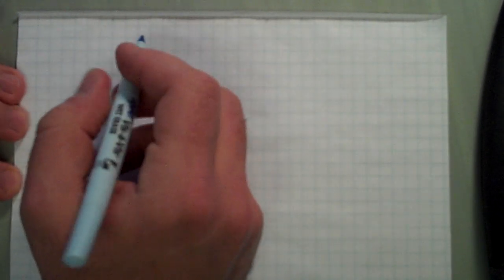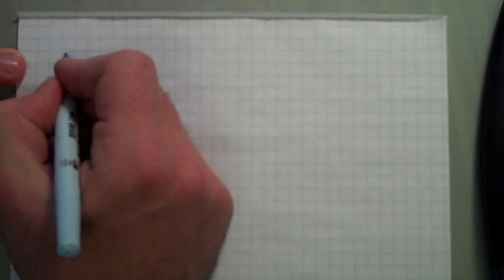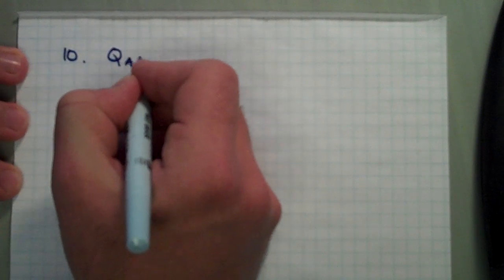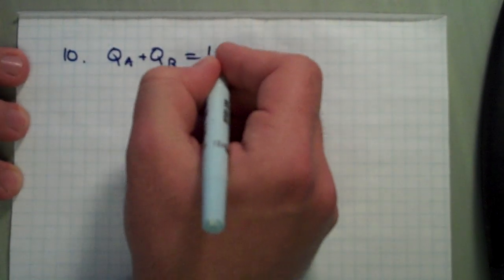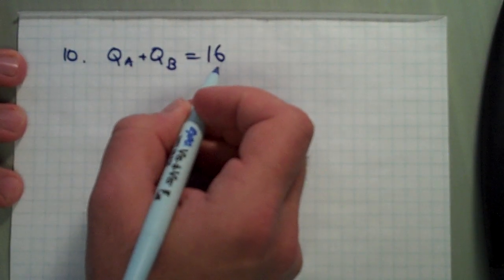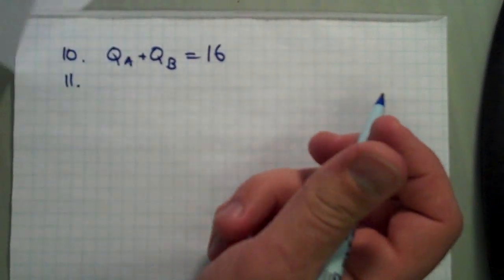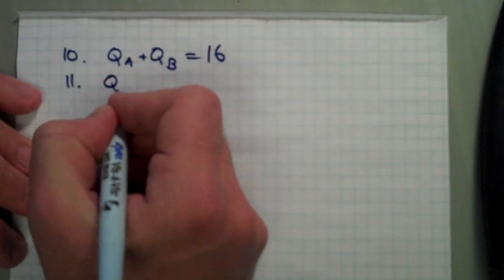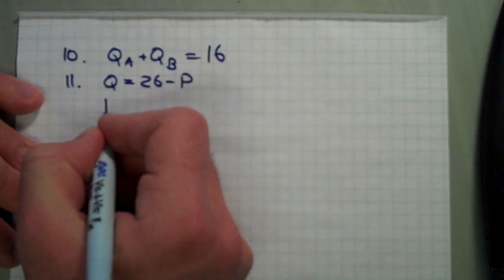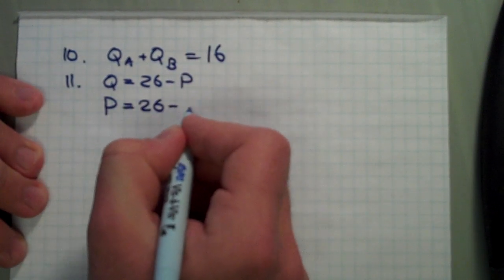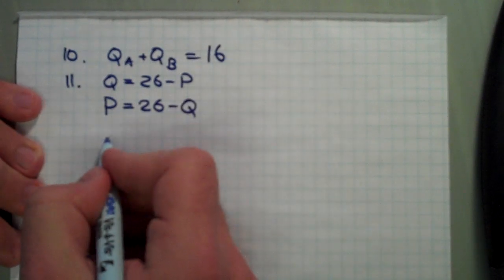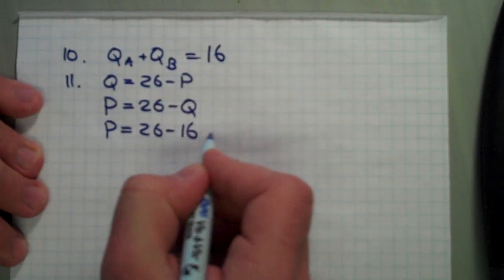Once we know each firm's quantity, we can calculate total output and market price. Total output is QA plus QB equals 8 plus 8 equals 16. Using the inverse demand P equals 26 minus Q, if market quantity is 16, the price equals 26 minus 16 equals 10.